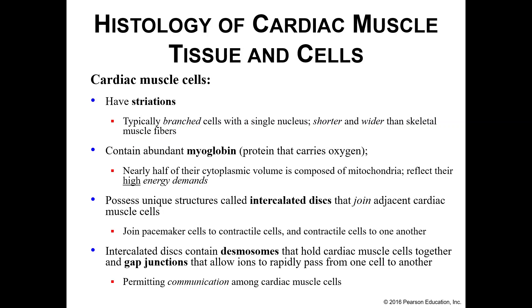Cardiac muscle cells have a unique structure known as intercalated discs. This is how you join one cardiac muscle cell to the adjacent cell. These also join pacemaker cells to the contractile cells, not just contractile cells to one another. Intercalated discs contain desmosomes, which help hold adjacent cells together, and gap junctions, which allow ions to pass rapidly between the cells, allowing for rapid communication among your cardiac muscle cells. Our whole goal is synchronicity.